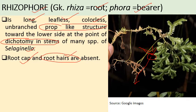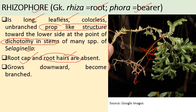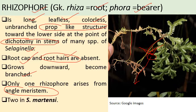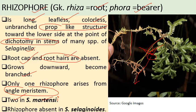As seen in the photograph, these structures are the rhizophores. They grow downward and later become branched. Usually only one rhizophore arises from the angle meristem, but in Selaginella martensii two rhizophores arise. In some species, rhizophore is completely absent, for example in Selaginella selaginoides.